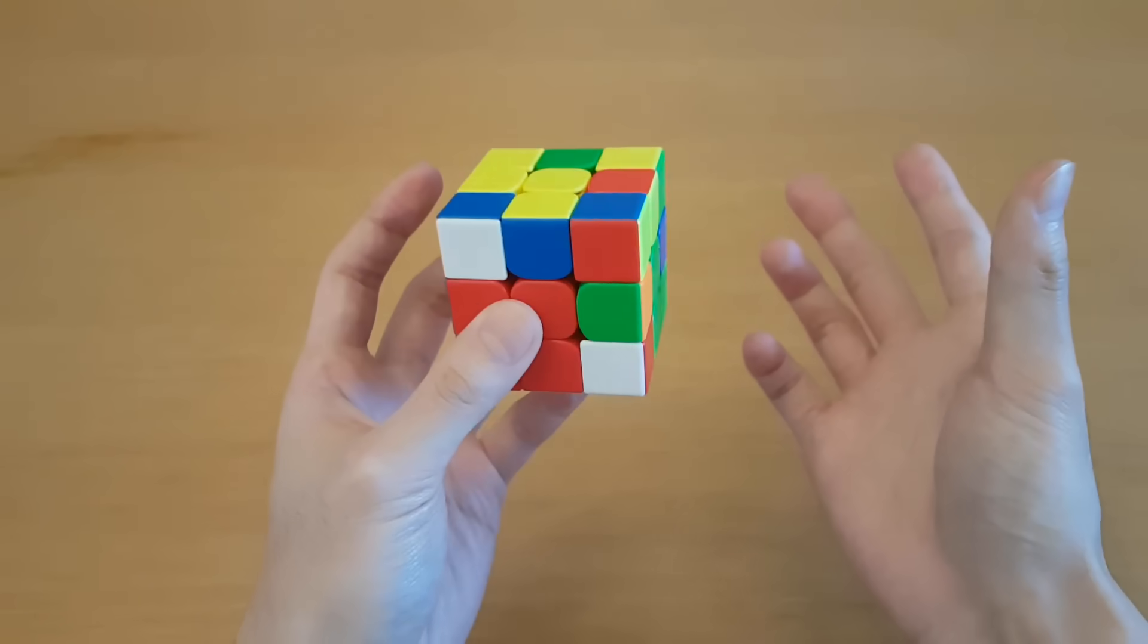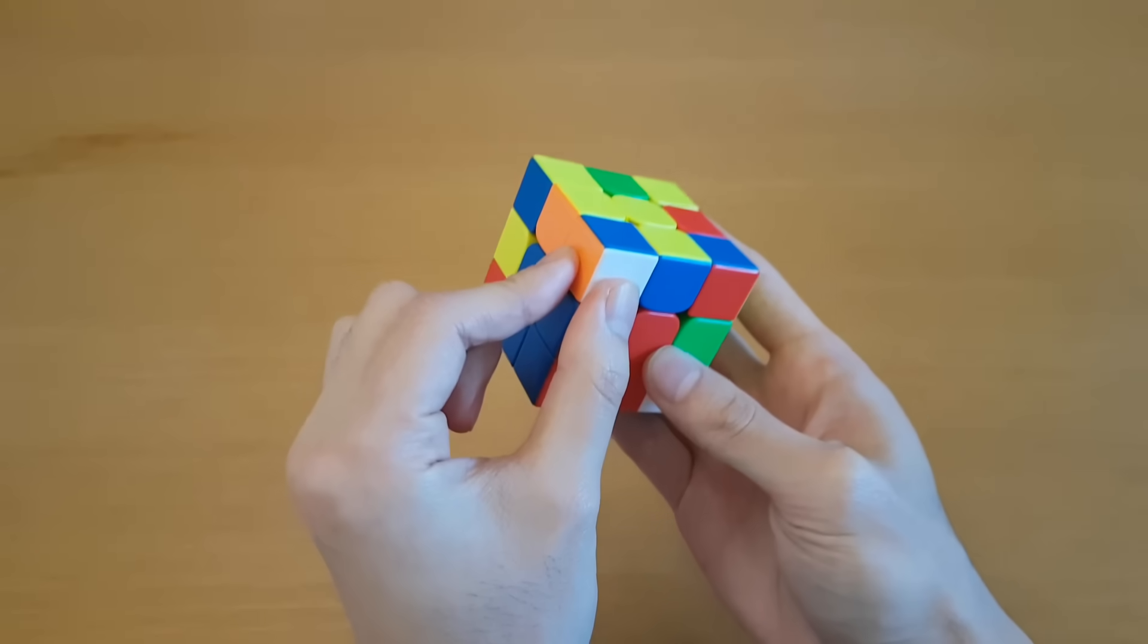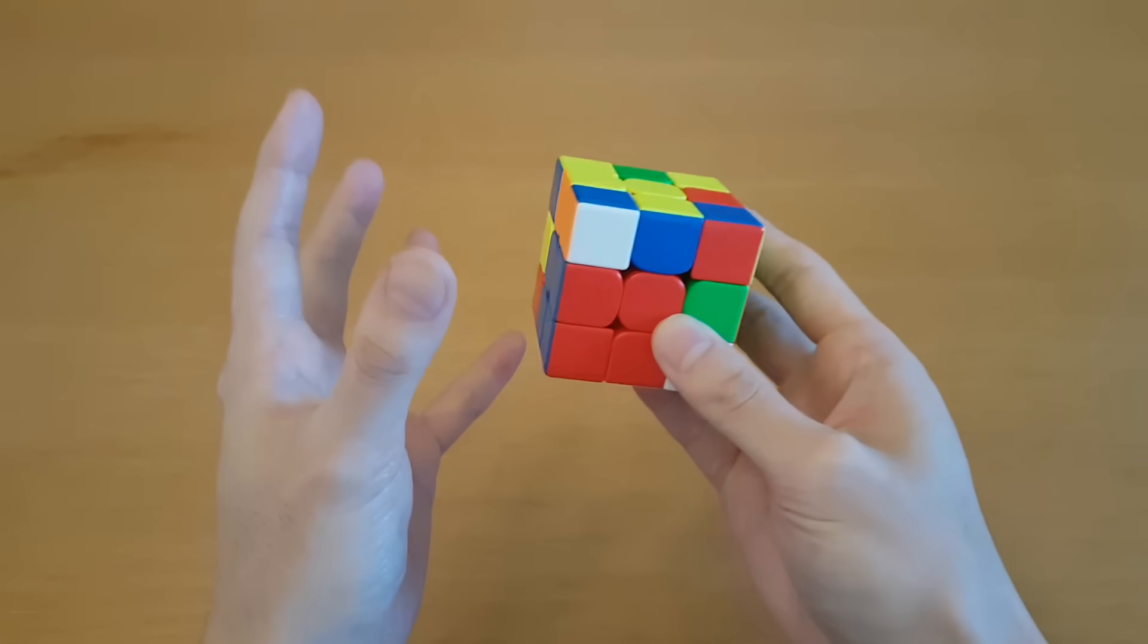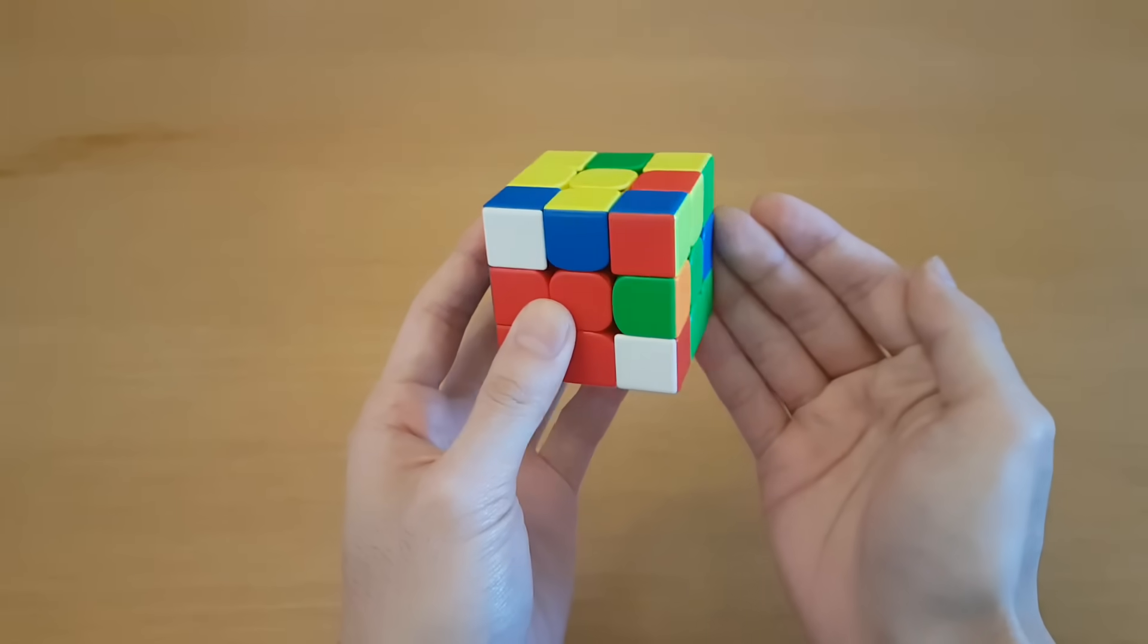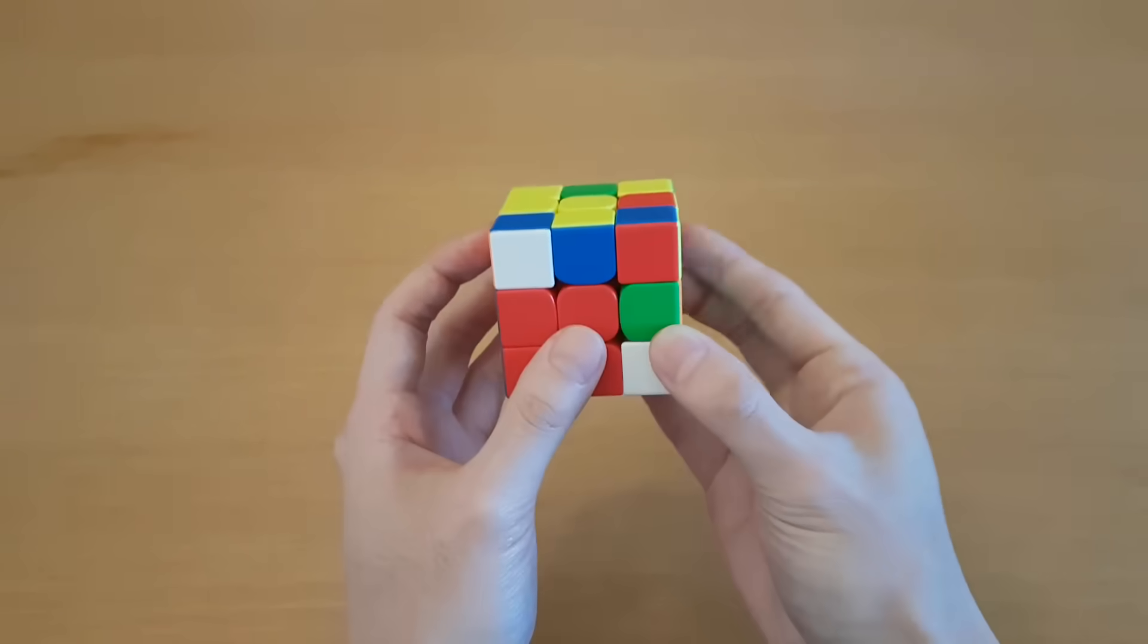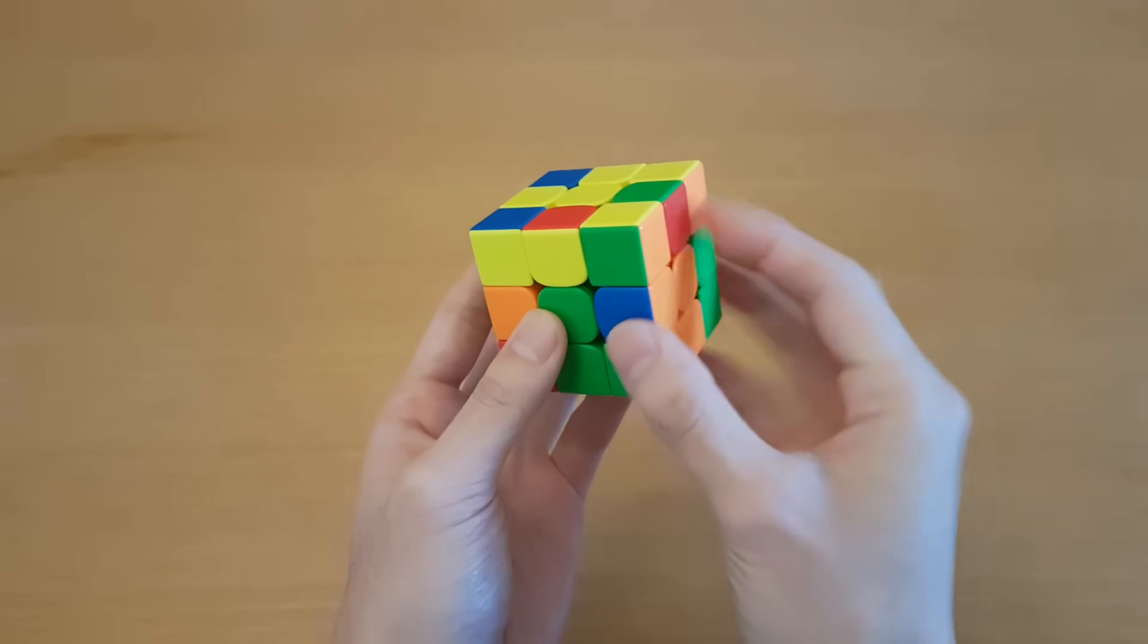When I'm critiquing solves, one of the most common issues I see is when you find an F2L piece, not being able to find the other one because it's somewhere at the back, and having to look to the back like this or do a cube rotation to help find it.